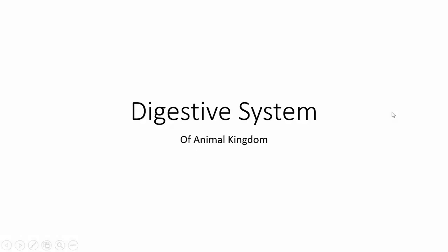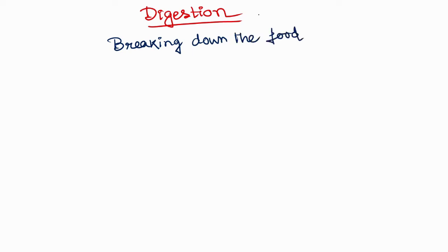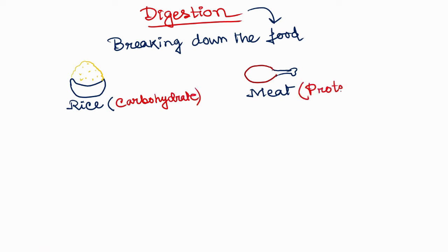In this video we are talking about the digestive system of the phylums in animal kingdom. What is digestion? Digestion is breaking down the food. Suppose you are eating two types of food — rice and meat. Rice is carbohydrate and meat is protein.